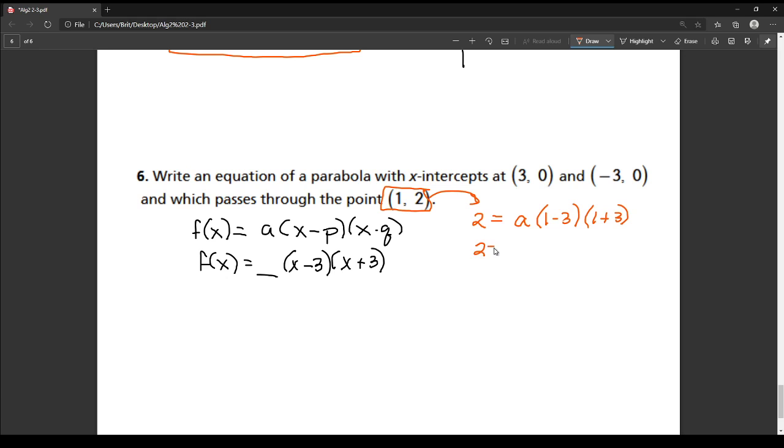So I simplify my parentheses, so 1 minus 3 is negative 2, 1 plus 3 is 4. So negative 2 times 4 is negative 8 times a, so I have negative 8a.